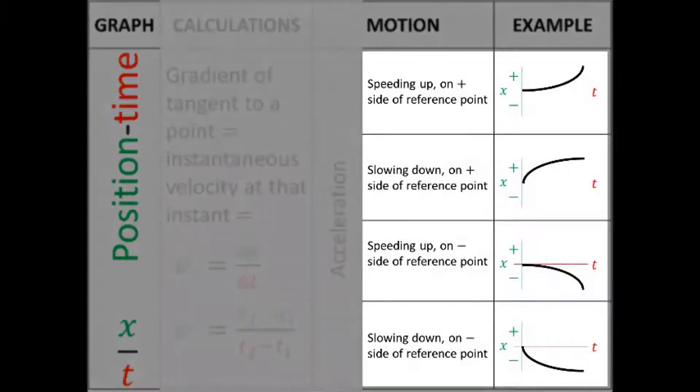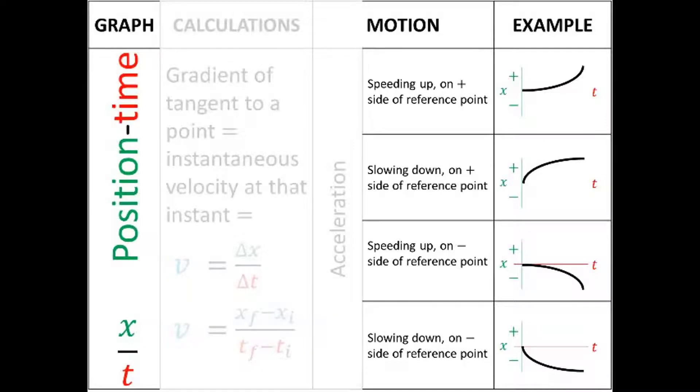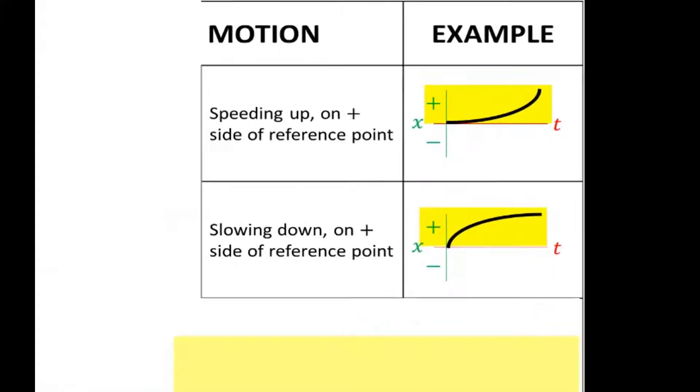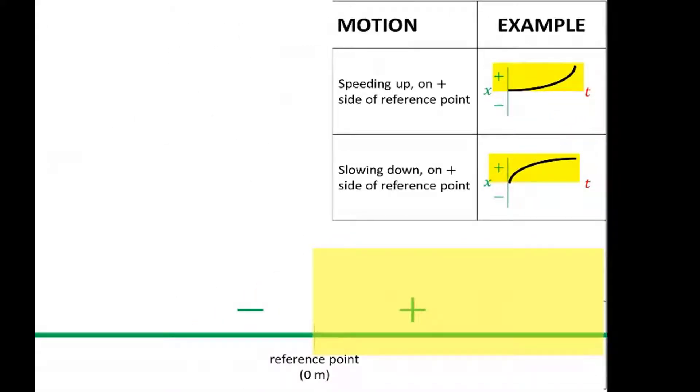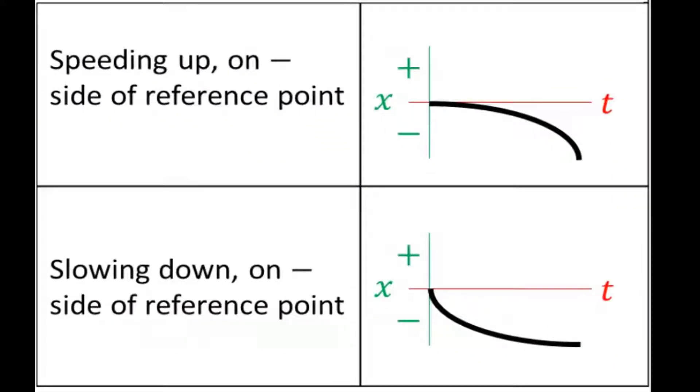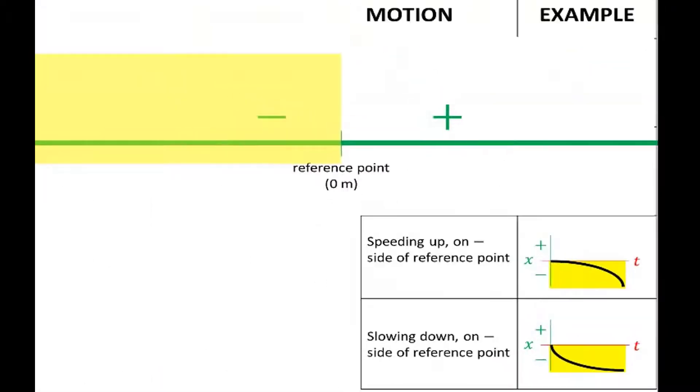Now let's look at these four different kinds of motion. First of all, you can see that the top two only have positive positions. So for the top two, the object is only ever on the right-hand side of the reference point. For the bottom two, the object only ever has negative positions. So the object is only going to be positioned to the left of the reference as it moves.